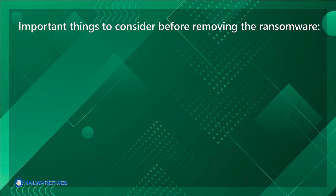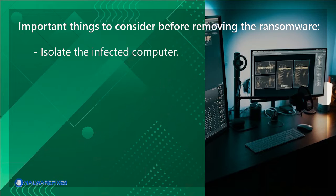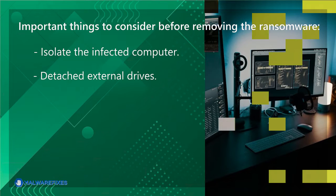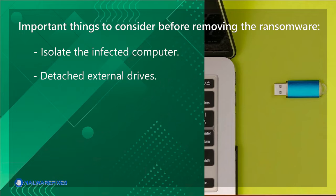Important things to consider before removing the ransomware. First, isolate the infected computer. Disconnect the infected computer from the network, including the Internet, to prevent the ransomware from spreading to other devices or servers on your network. This step helps contain the infection and limits its impact. Second, detach external drives. Do not connect any drives, such as USB, memory sticks, or backup drives that contain important data. The ransomware may also encrypt the files on these drives if they are attached to the infected computer.